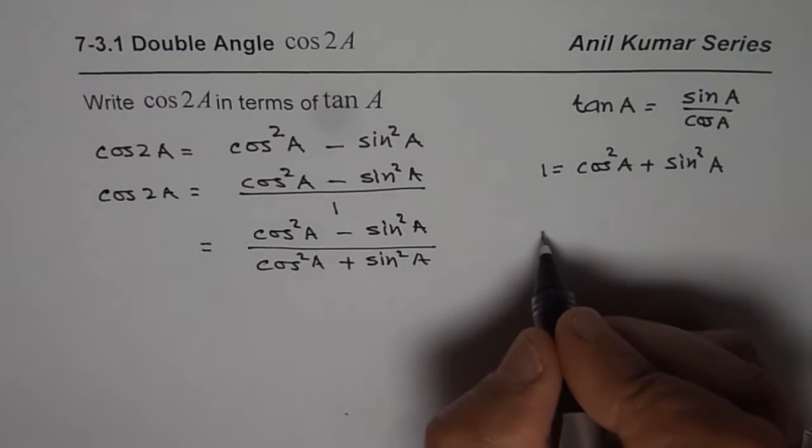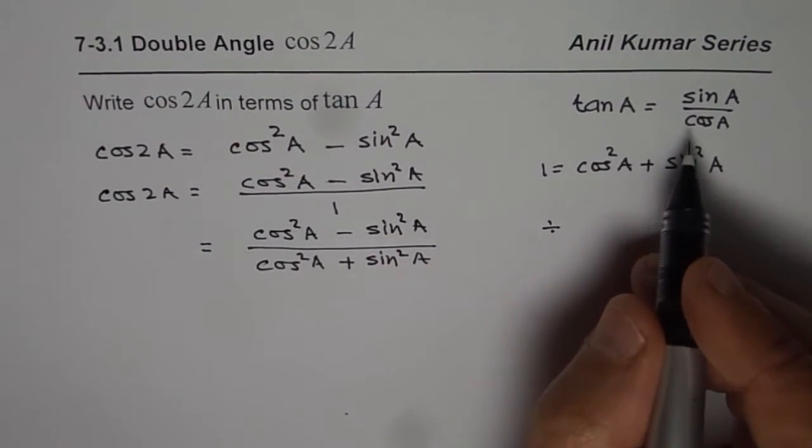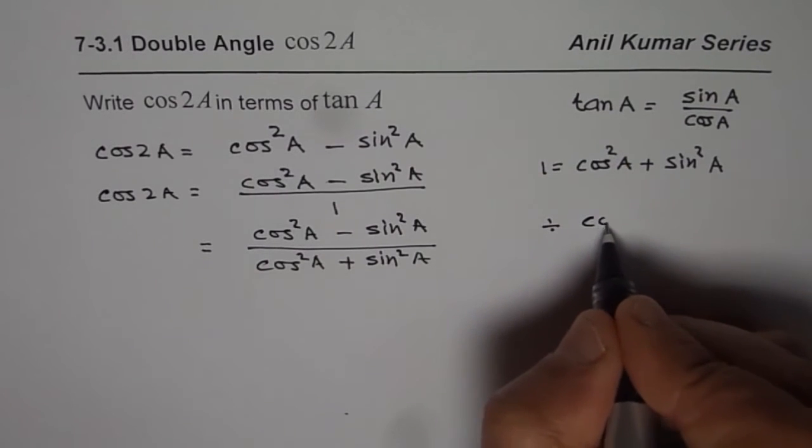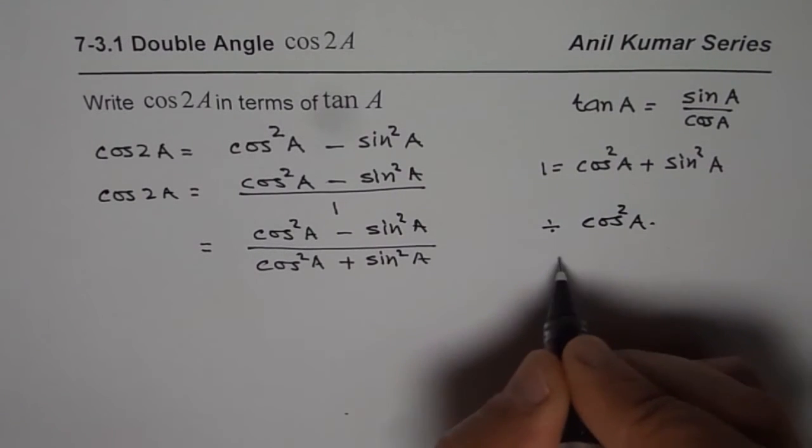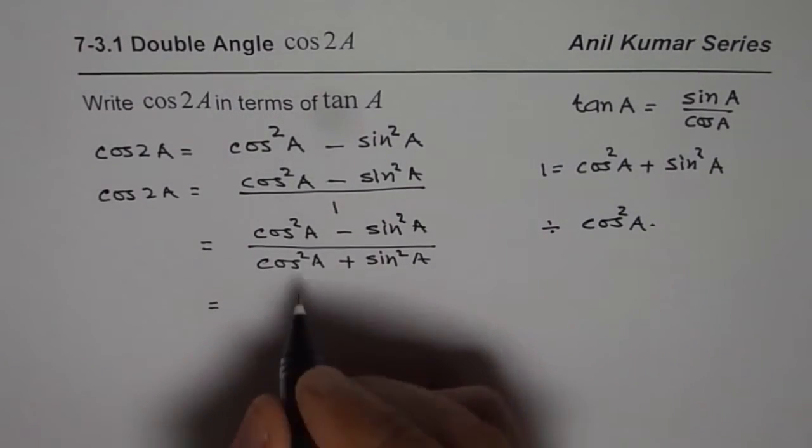And the next step is to divide both by cosine squared. So we divide both by cos²A. We will divide both numerator and denominator by cos²A.